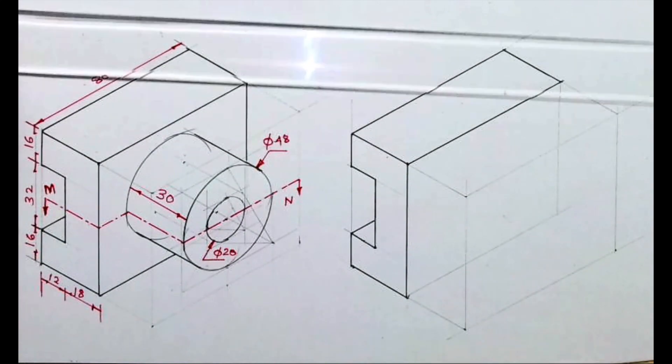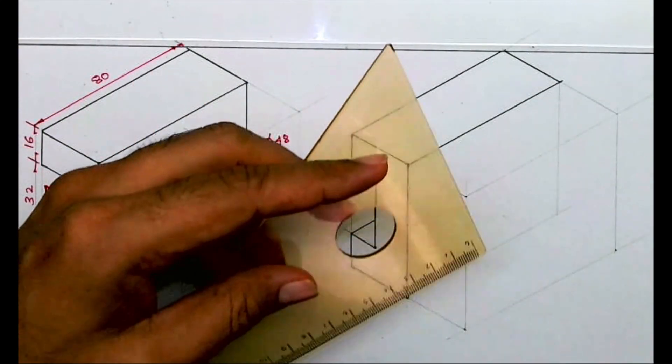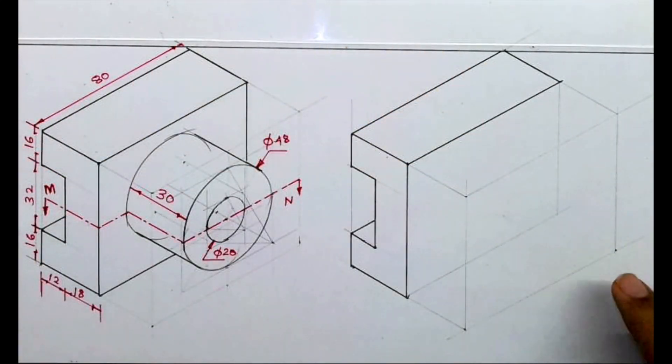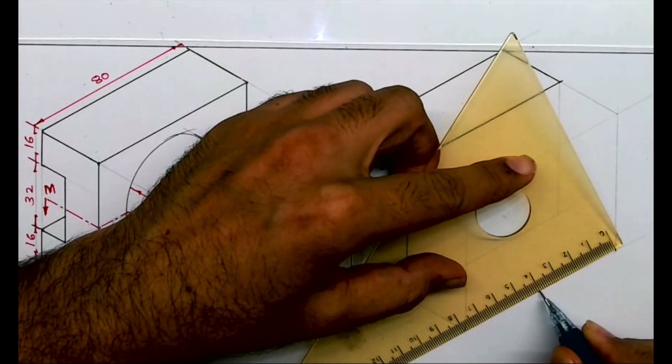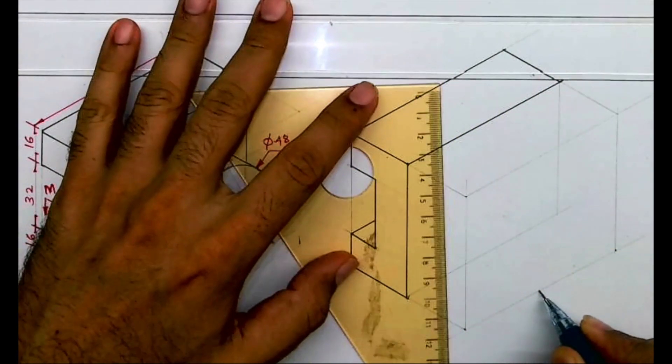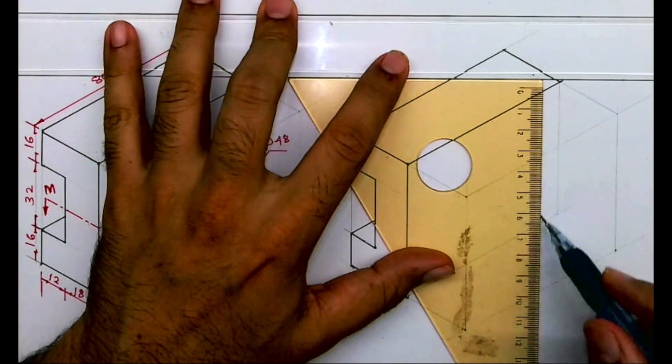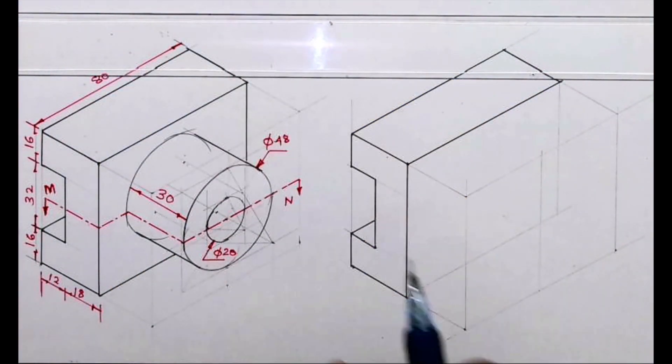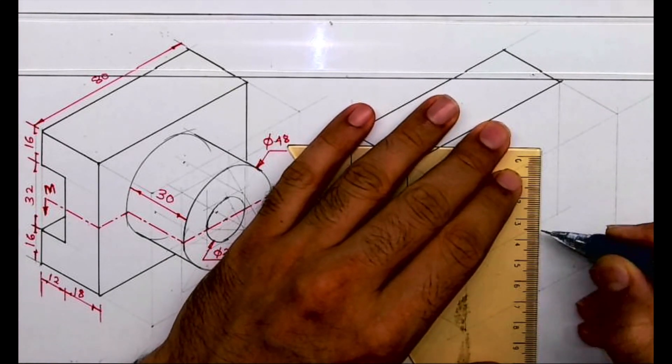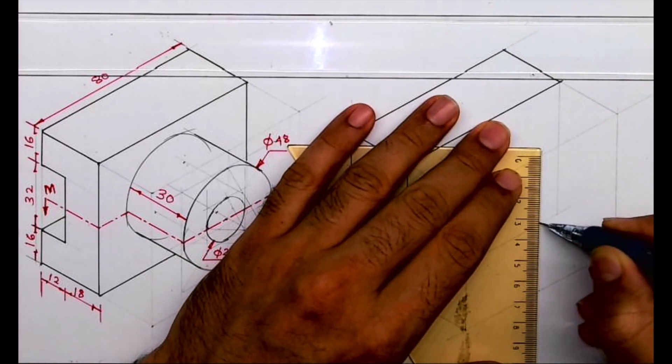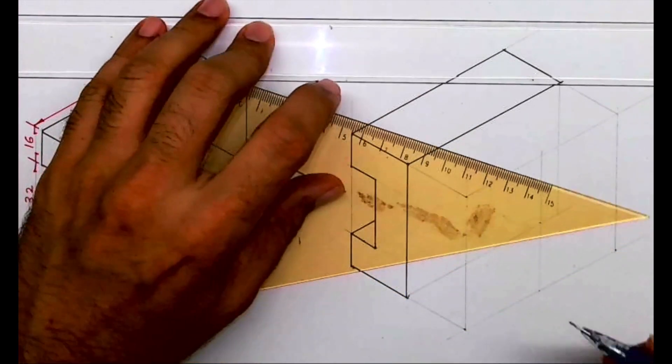So we are done with the top part as well as that slot. Now I'll take the midpoint of this. It is 80, so I'll take 40, then I'll go up straight. I'll take half of this which is 64, so I will take 32. So that will be my center.